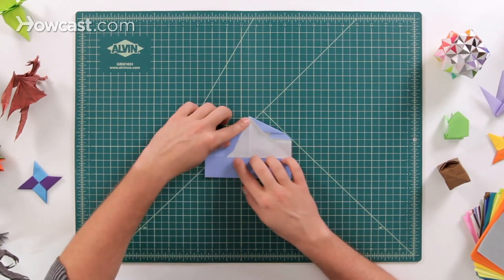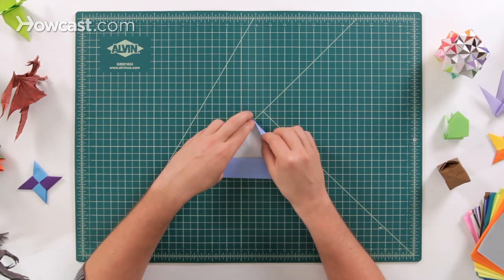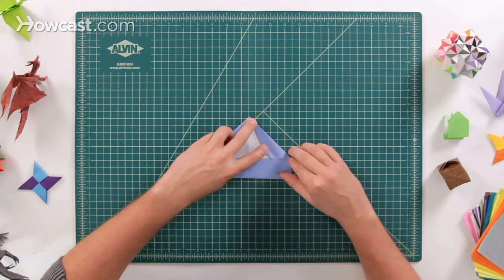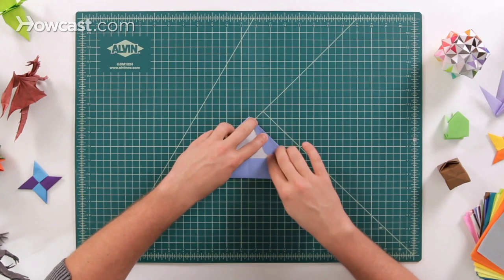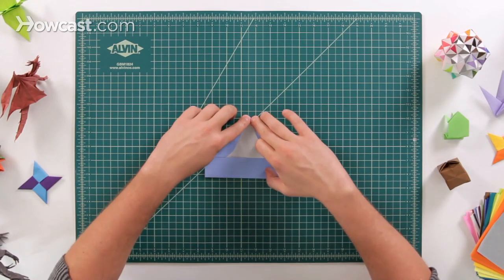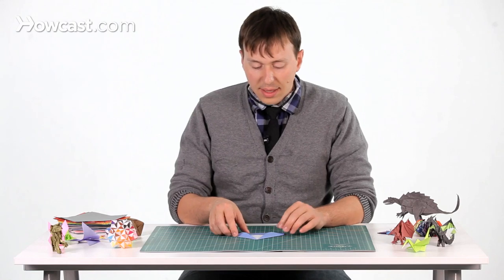Next step, we're going to rotate those down one more time, and we're going to come down on both sides like that. That's using the crease that we already created.